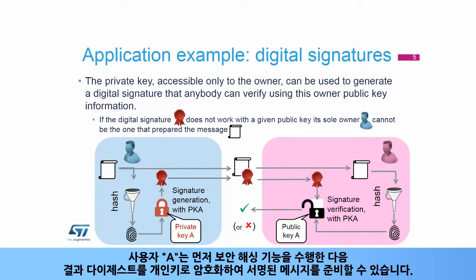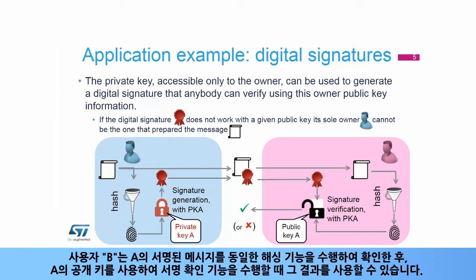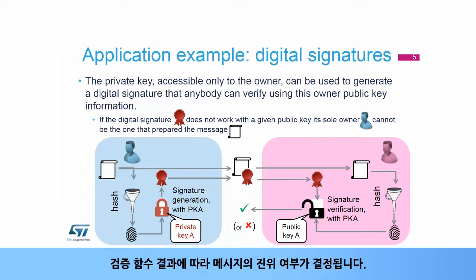Person A can prepare a signed message by first performing a secure hashing function on it, then encrypting the resulting digest using their private key. The resulting signature is sent alongside the message to person B. Person B can verify the signed message by performing the same hashing function on it, then using the result with the signature verification function using A's public key. The result of the verification function determines if the message is genuine or not.